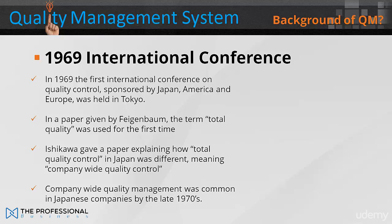In a paper given by Feigenbaum, the term 'total quality' was used for the first time, referring to wider issues such as planning, organisation and management responsibility. Another paper explained how total quality control in Japan carried a different meaning, referring to company-wide quality control, and described how all employees — from top management to the workers — must study and participate in quality control. Company-wide quality management was common in Japan by the late 1970s.